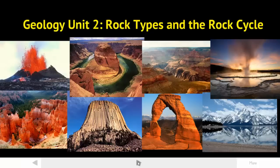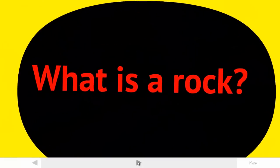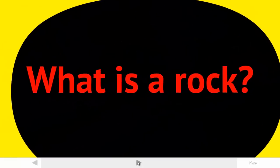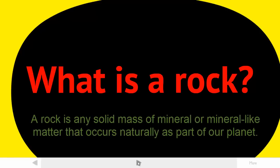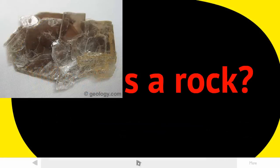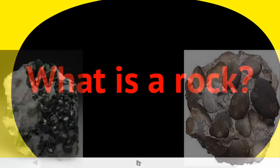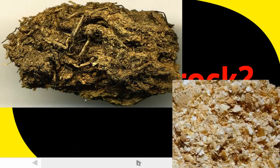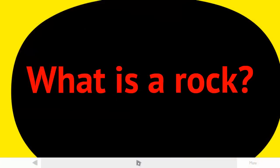Let's jump into the material. The first question you need to answer is: what is a rock? A rock is any solid mass of mineral or mineral-like matter that occurs naturally as part of our planet. It could just be a mineral, a collection of minerals that grew or compacted together, or even mineral-like material stuck together. It could be coal, seashells, or even plant material that was hardened into a rock.